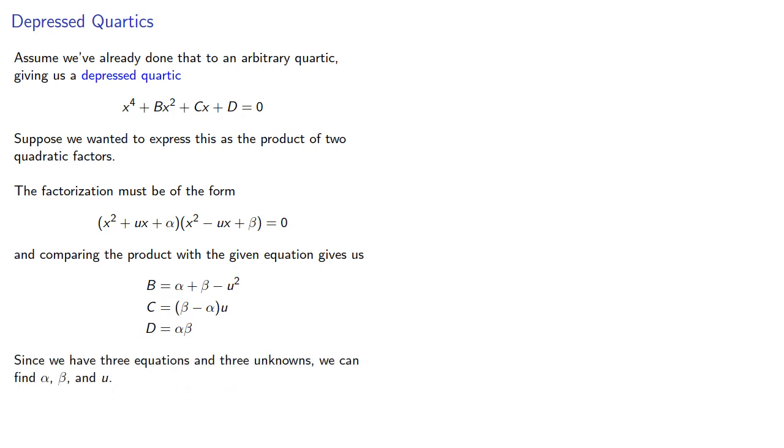And since we have three equations and three unknowns, we can find alpha, beta, and u. Now it turns out to be convenient if we find alpha and beta first, because their product is equal to d, which is the constant in our original equation.